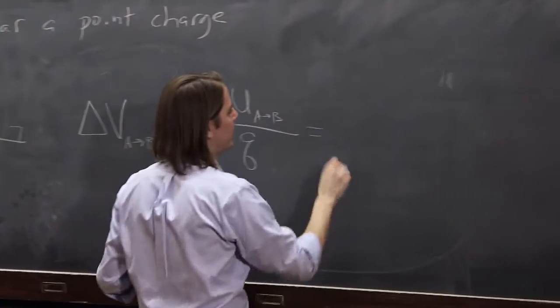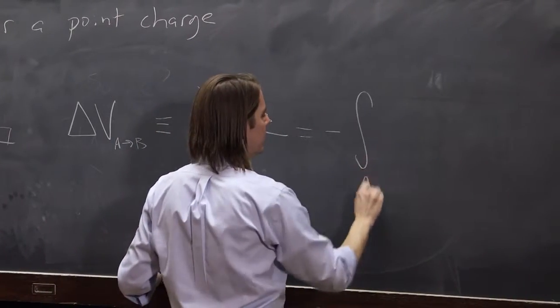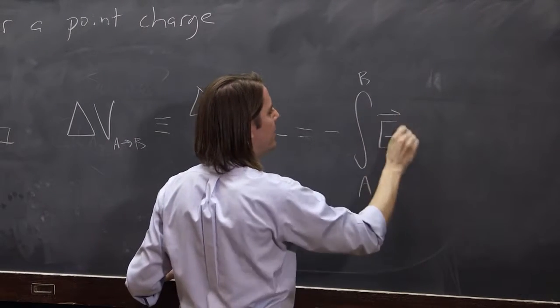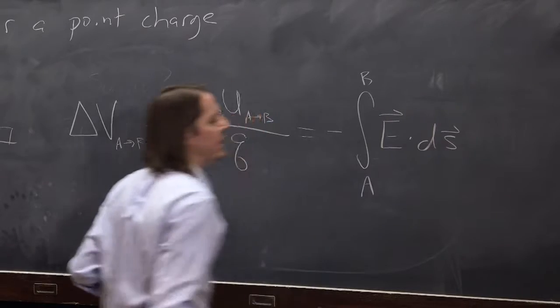And then, if you want to write the integral, then it's minus the integral from A to B. And the Q is just gone. Minus the integral from A to B of E dot dS.